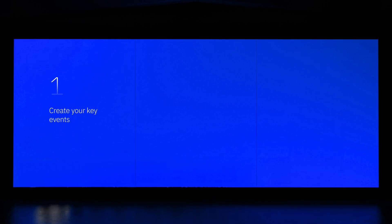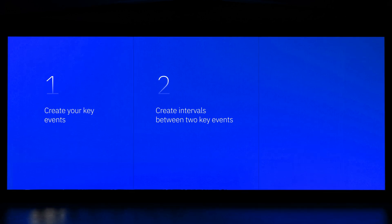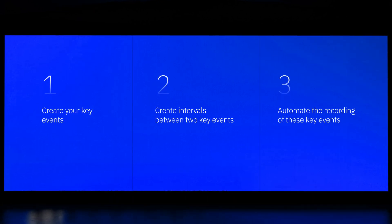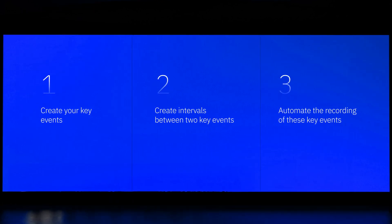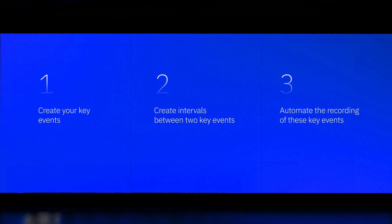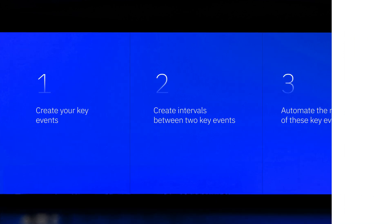You can set up key events and intervals in three simple steps. The first step is to create your key events. The second step is to create intervals between two key events. The third step is to automate the recording of these key events. Let's consider an example before proceeding to set up the feature.